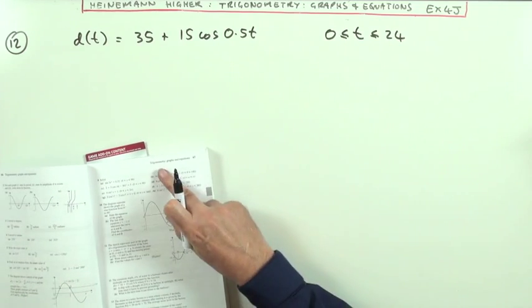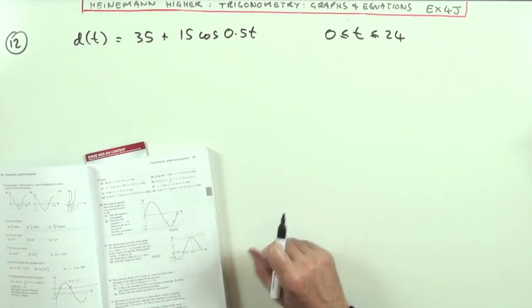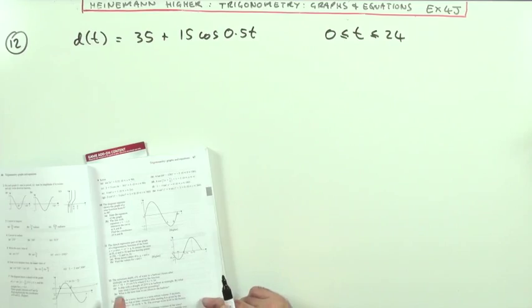Heinemann Higher, Chapter 4, Trigonometry, Graphs and Equations. Next exercise, 4Gi at the end, number 12.